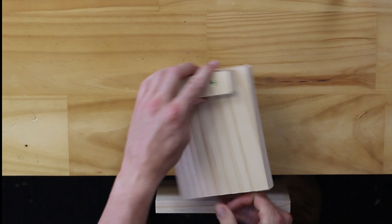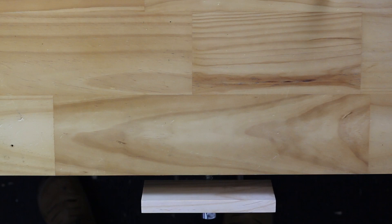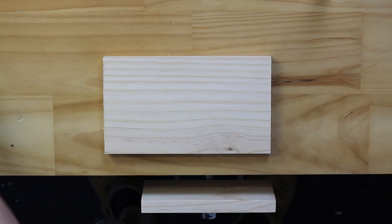Bench hooks are a super nifty tool which can be used for cutting as well as chiseling. The very first step is to check that your timber is the correct length. It should be 240mm long.